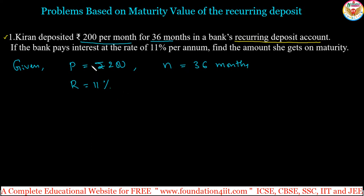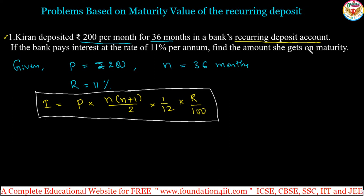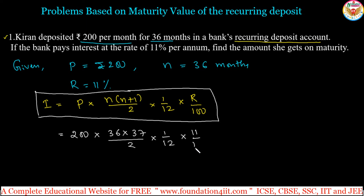Once you know monthly deposit amount, number of months, and rate of interest, we have the formula to find out the interest I. The formula is: I = P × N × (N+1) / 2 × (1/12) × (R/100). Applying this formula, substituting P as 200, N as 36, so N+1 is 37, and R as 11, giving 11/100.